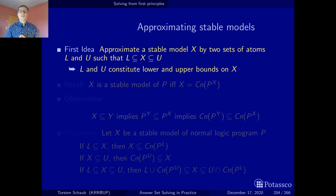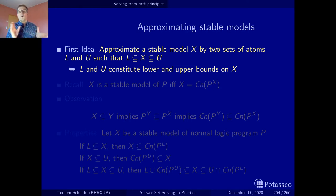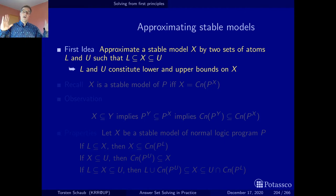This idea is not really new to those of you who went through the grounding material, because there we had the atom base. The atom base, although we used it for grounding, constituted an upper bound — these are all the atoms that are still possible to be derived. We also saw a distinguished set of true atoms in the atom base, and those constituted the lower bound. So you already saw this idea of lower and upper bounds in grounding, though here the idea is to ultimately approximate the stable models so we only have a single stable model in between.